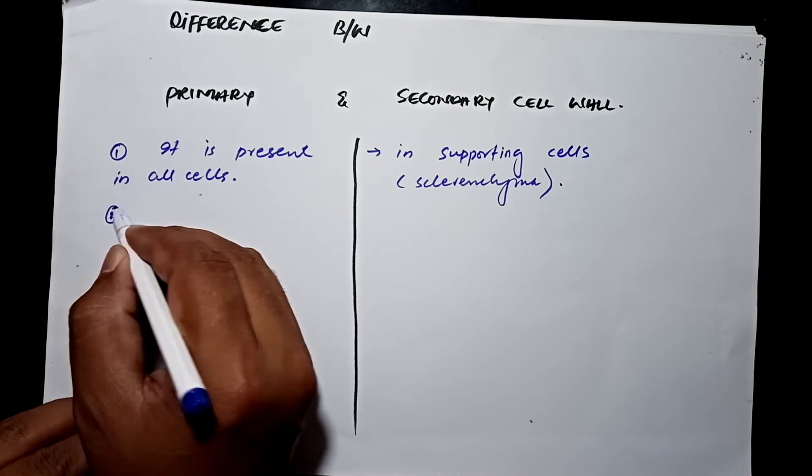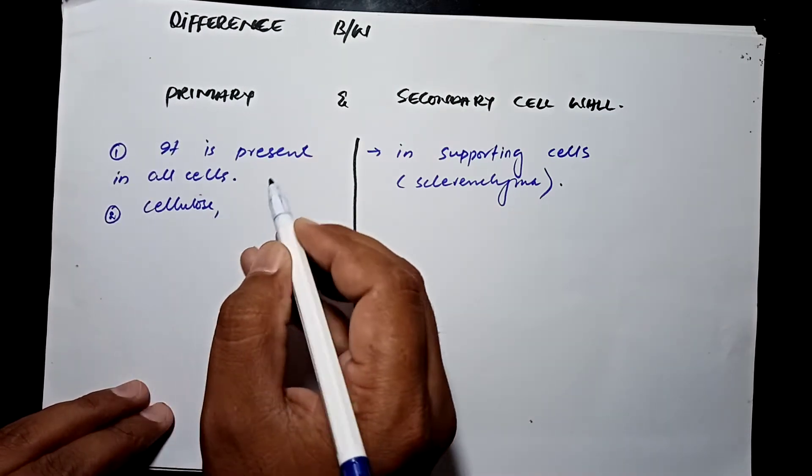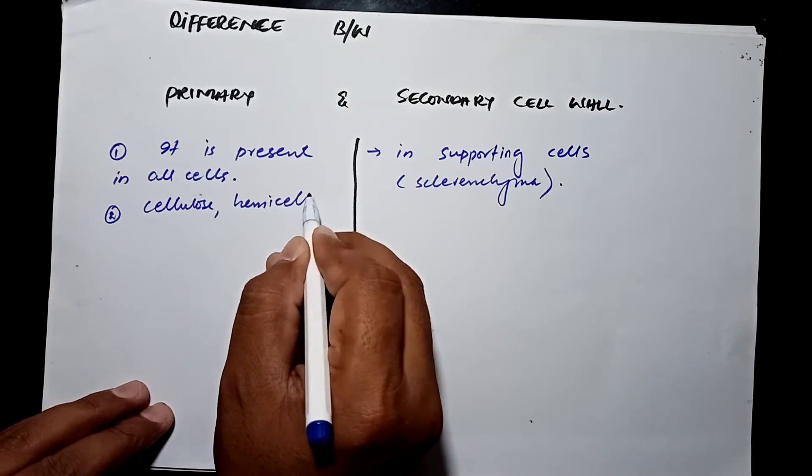Its composition: it is made up of cellulose, hemicellulose, and pectin.